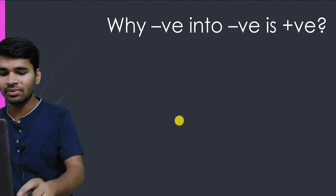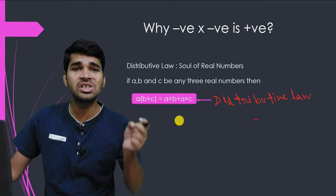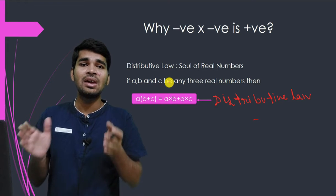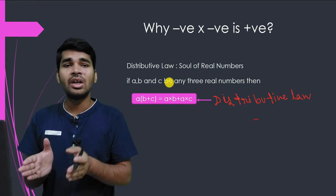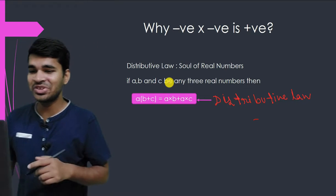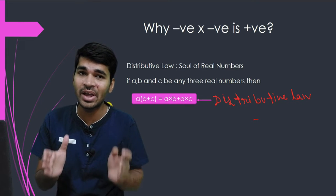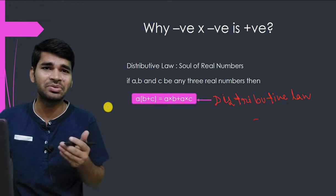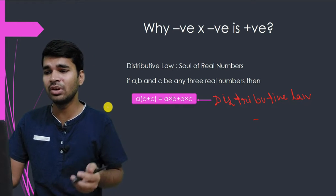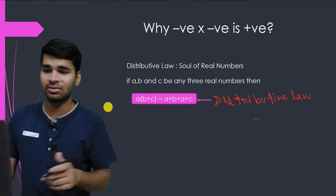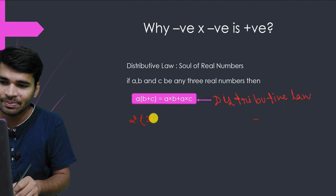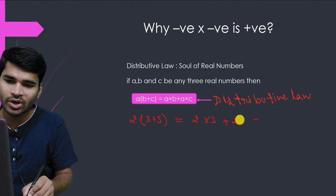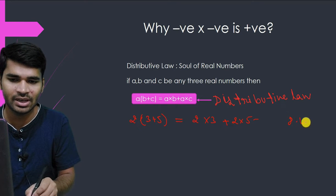There is a law in mathematics called the distributive law. If a, b, and c are three real numbers, then a times (b + c) equals a times b plus a times c. For example, 2 times (3 + 5) by distributive law equals 2 times 3 plus 2 times 5.